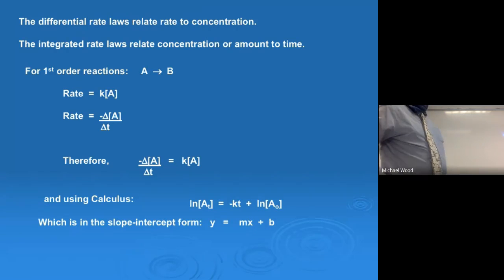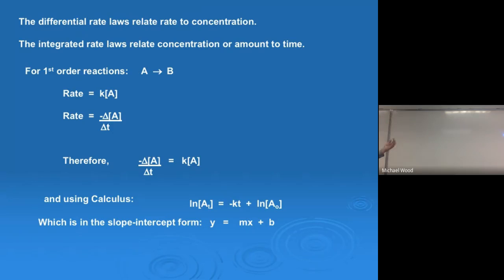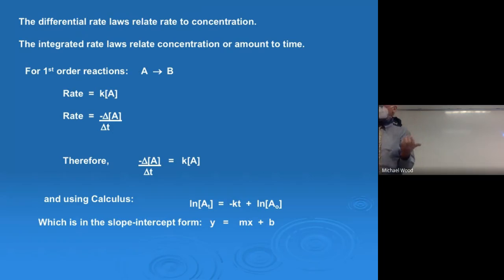What is important are the top two lines. What we've been working with since last week is concentration versus rate data — and on today's sulfur lab that's what we're doing — that's the differential rate law. Now the integrated rate law is going to use concentration versus time data. That's what the penny lab was about. We're going to be looking at concentration versus time data and doing a lot of graphing.